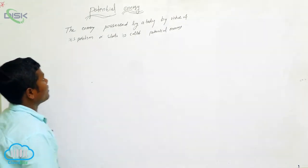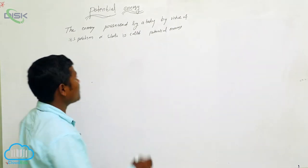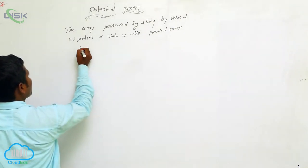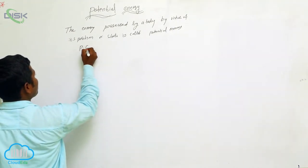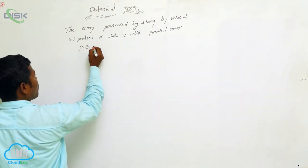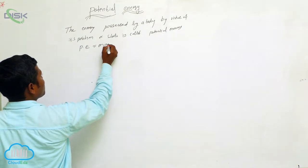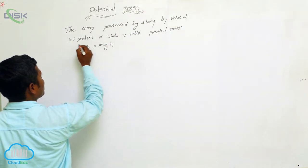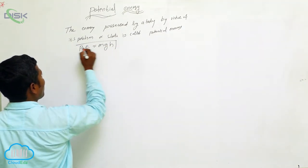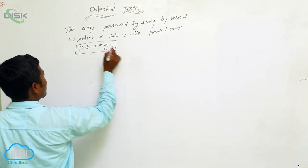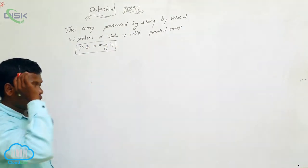In general, we denote potential energy as P.E. What is the formula of potential energy? It is MGH. This is the formula.